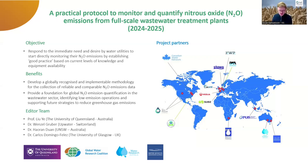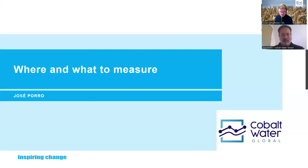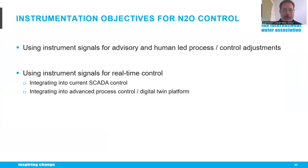Next up is José Poro. As both Wenzel and Christian mentioned, it's not only about measuring N2O — you also need to assess the state of the plant in terms of other parameters. José has developed a risk-based approach and founded his spin-off company Cobalt Water Global, and has been working on N2O since 2009. Before going into what and where to measure, it's helpful to think about the various control objectives, because there are different levels at which we can act upon insights from measurements.